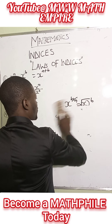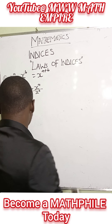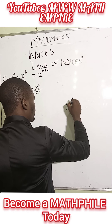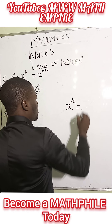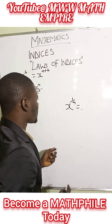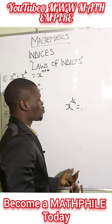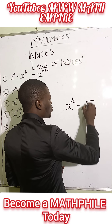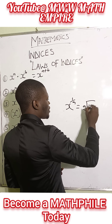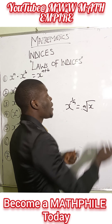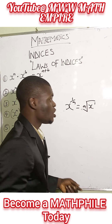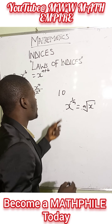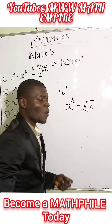We have the last one: x raised to the power of 1 over a. Looking at this, it also implies the a-th root of x — that is, the square root of x raised to the power of 1, but you don't normally write the 1. Remember that any whole number is raised to the power of 1.